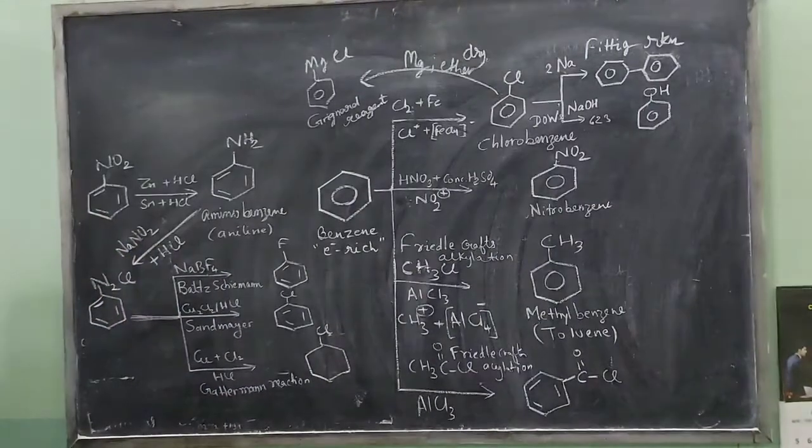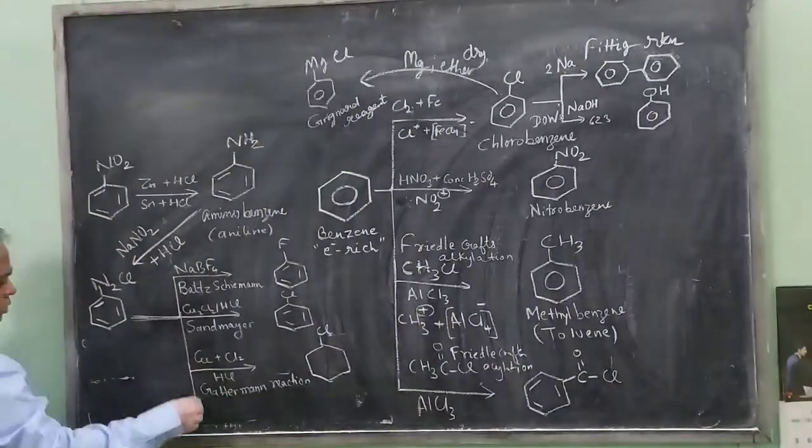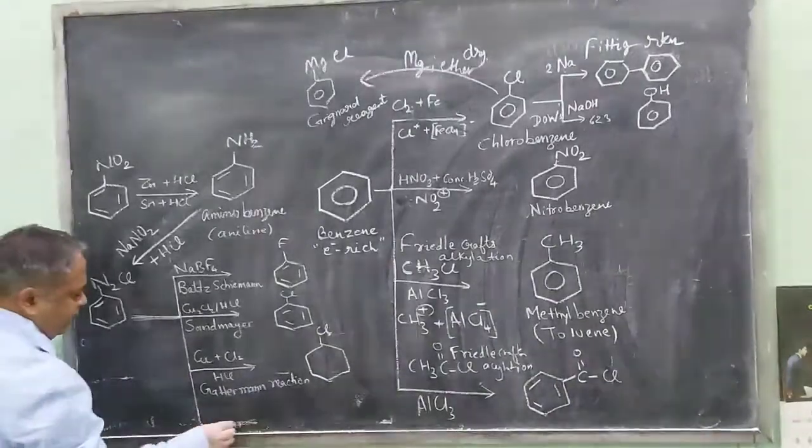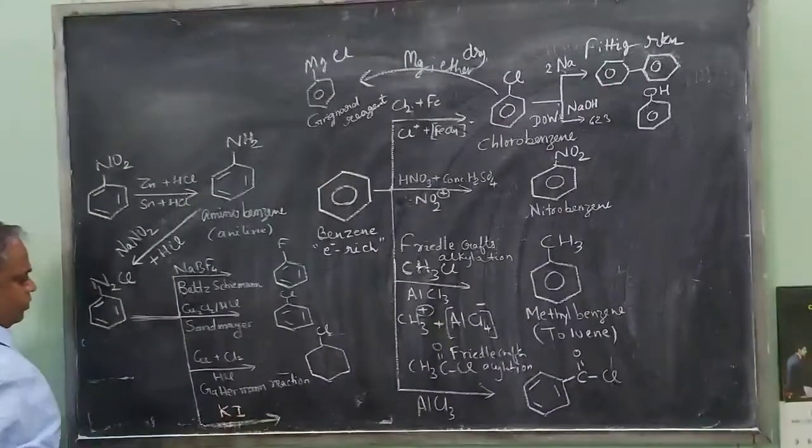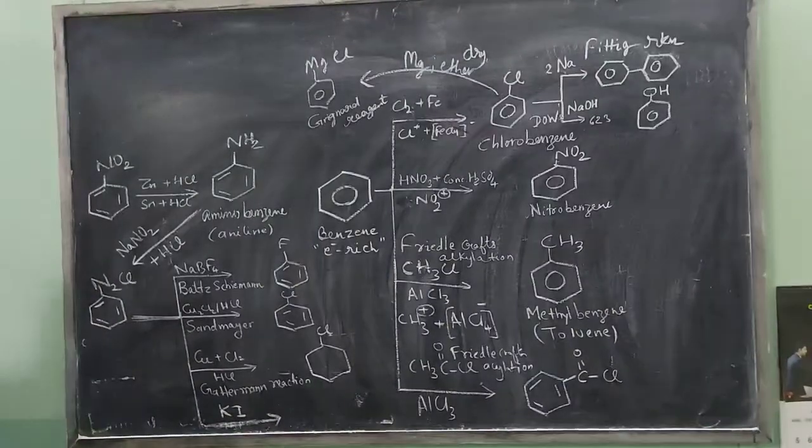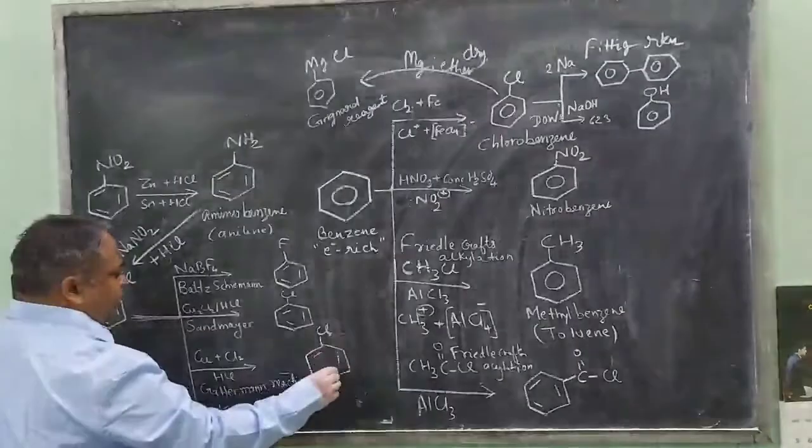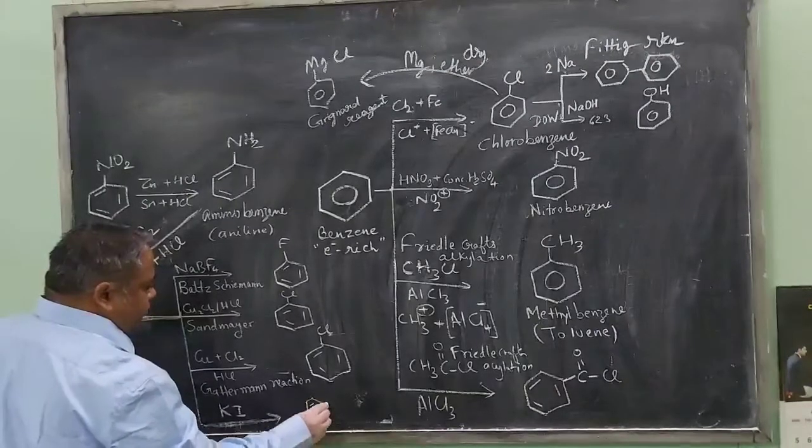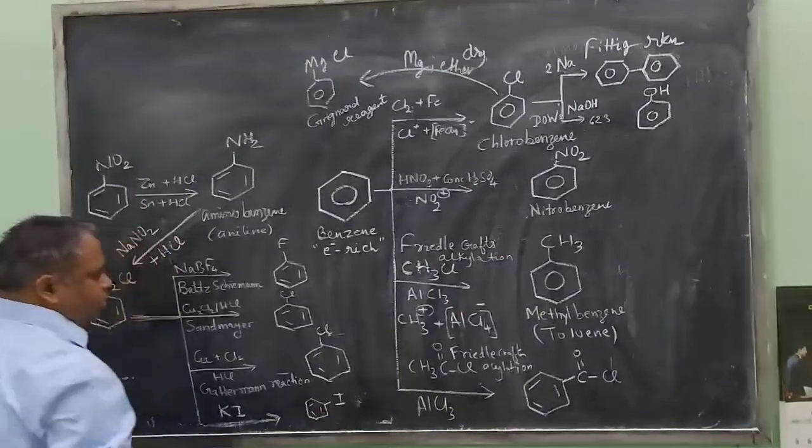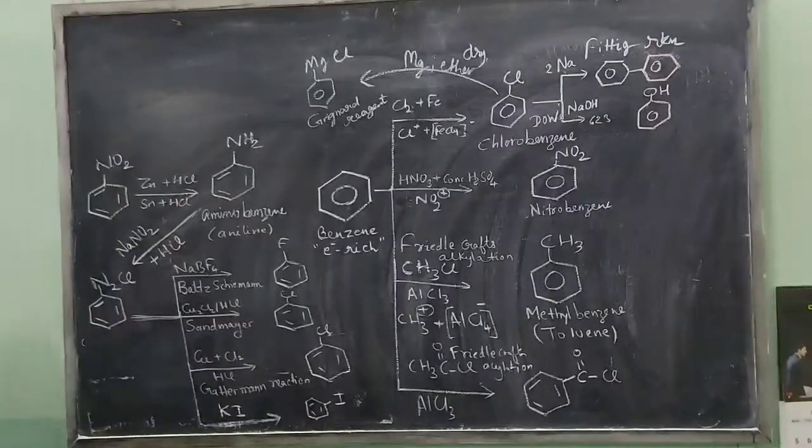An extension of this process can also be used, which is not named particularly, but if KI is used with benzene diazonium chloride, it can form iodobenzene too.